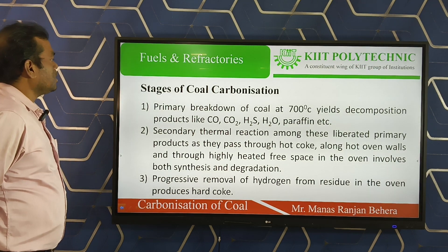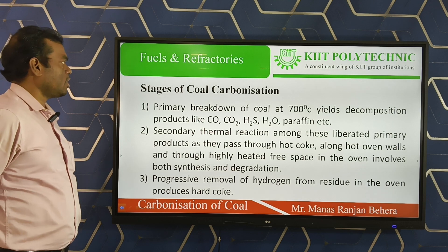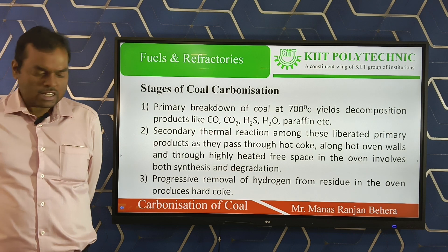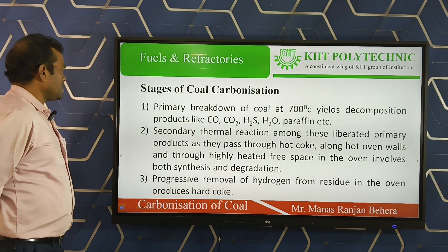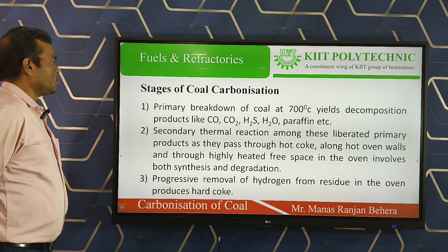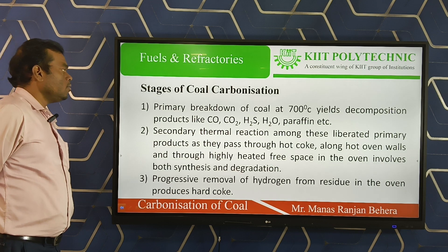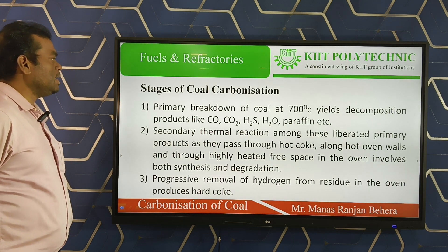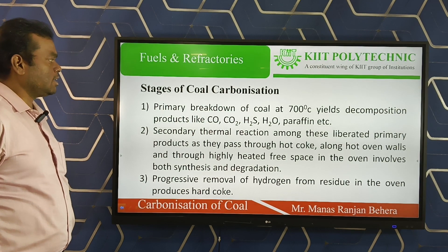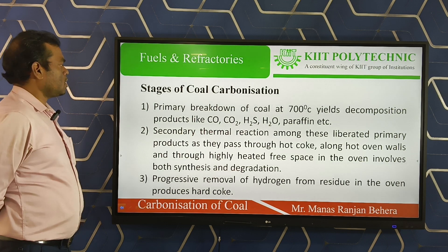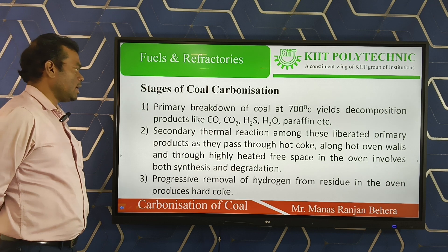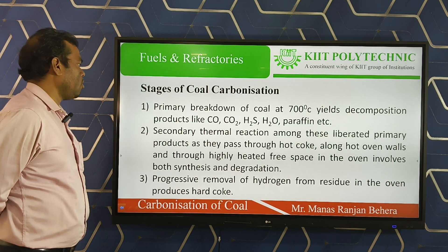Now we can see the stages of coal carbonization. There are three different stages in the formation of coke. In stage one, the coal is decomposed — a primary breakdown of coal occurs at around 700 degrees centigrade. During decomposition, products like carbon monoxide, carbon dioxide, H₂S, paraffin, etc. are formed.